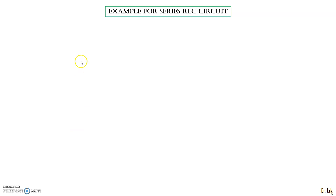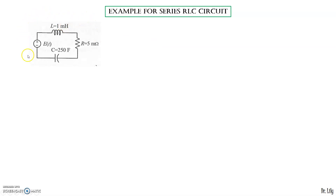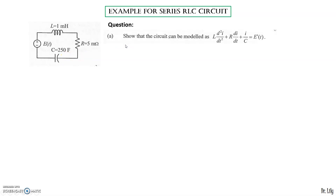Now let's have a look at the following example for series RLC circuit. You are given this circuit — an RLC series circuit with a supply voltage E(t), an inductor of 1 mH, a resistor of 5 mΩ, and a capacitor of 250 Farad. The question asks: show that the circuit can be modeled as L·d²I/dt² + R·dI/dt + I/C = E'(t).